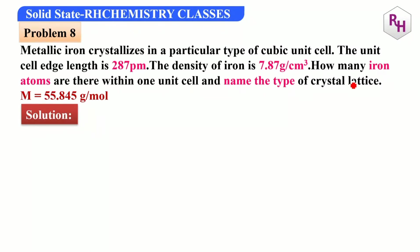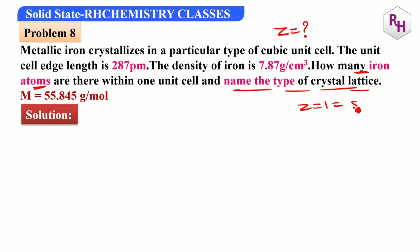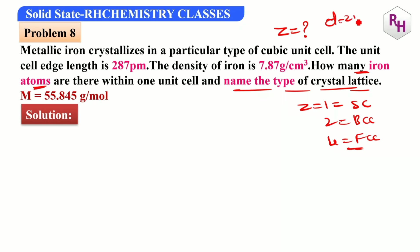Next problem: how many iron atoms are in one unit cell? Iron has BCC structure, so Z = 2. Now calculate density using d = ZM/(a³·NA).